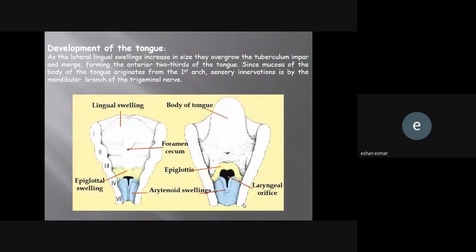As the lateral lingual swellings increase in size, they overgrow the tuberculum impar and merge, forming the anterior two-thirds of the tongue. Since the mucosa of the body of the tongue originated from the first arch, sensory innervation is by the mandibular branch of the trigeminal nerve. This is the body of the tongue.